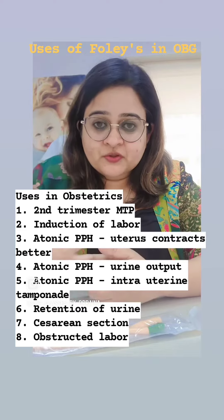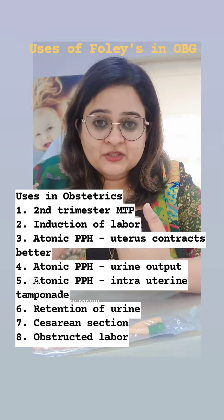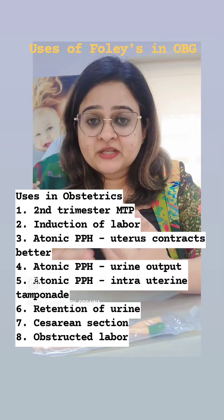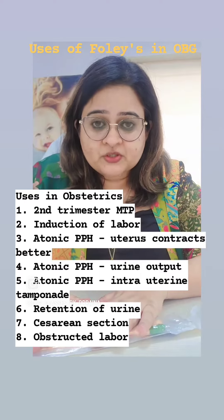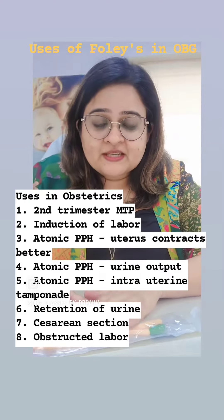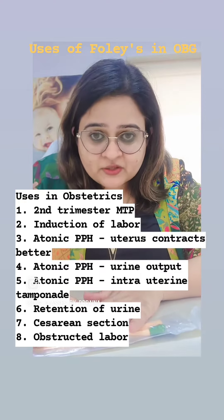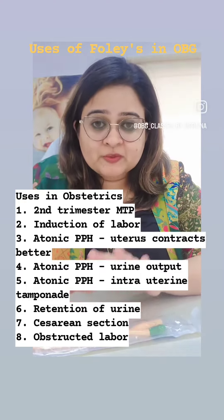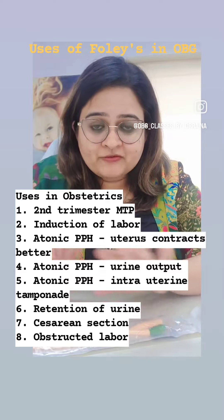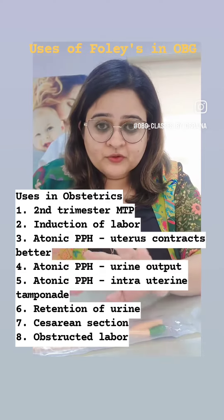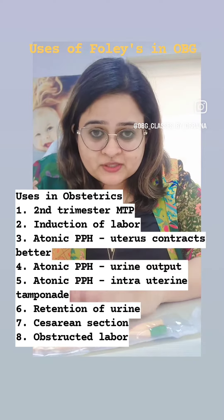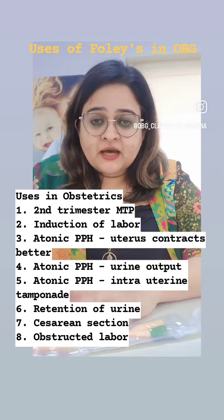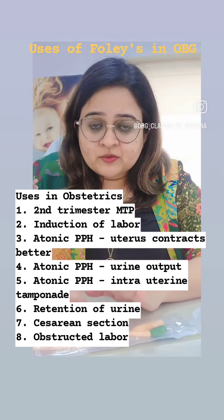In the first trimester, when there is a retroverted uterus and the patient may present with retention of urine, we catheterise the patient. During caesarean sections, we catheterise the patient to keep the bladder away from the lower uterine segment so we can visualise the uterus better and avoid injury to the bladder.